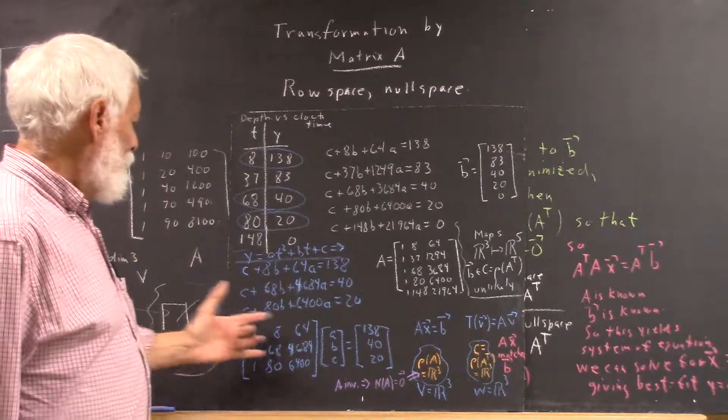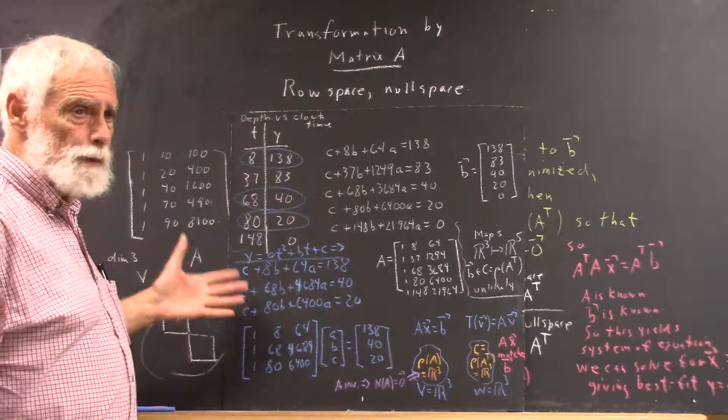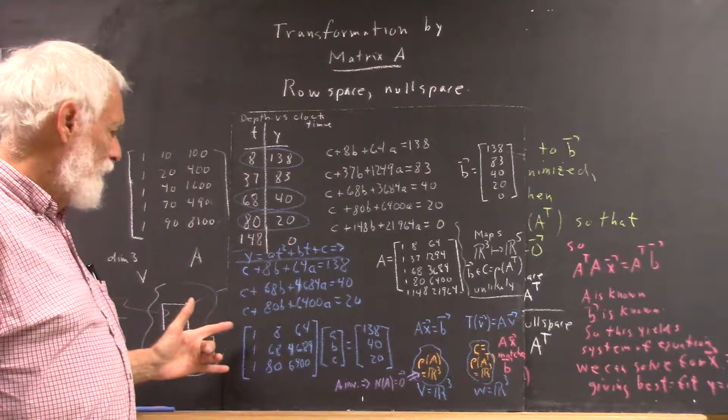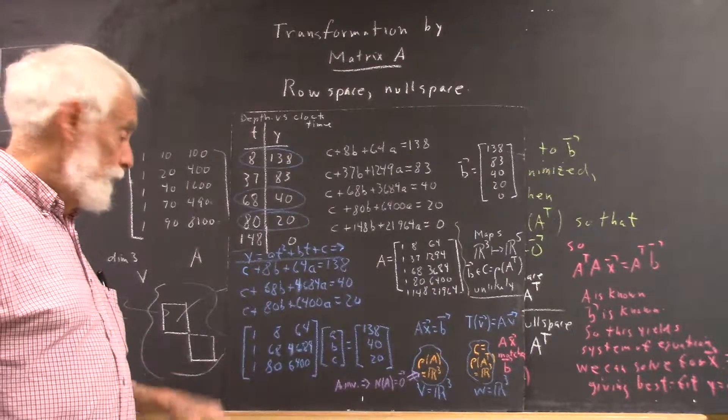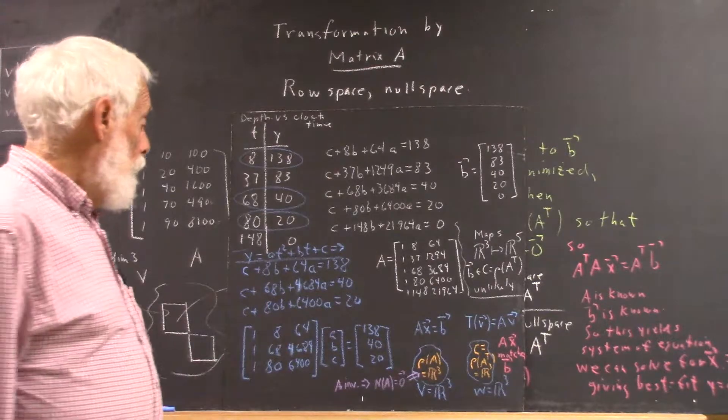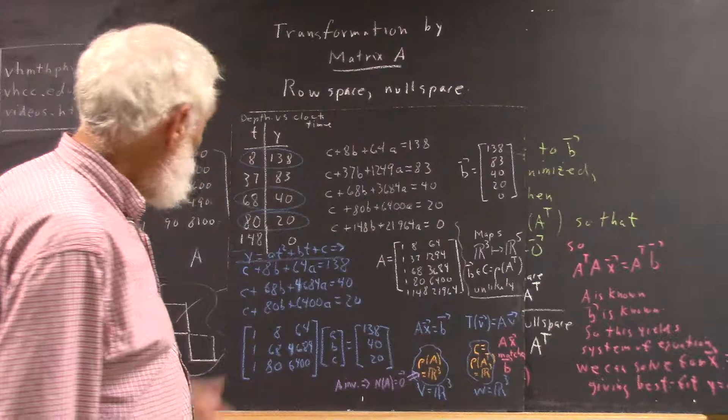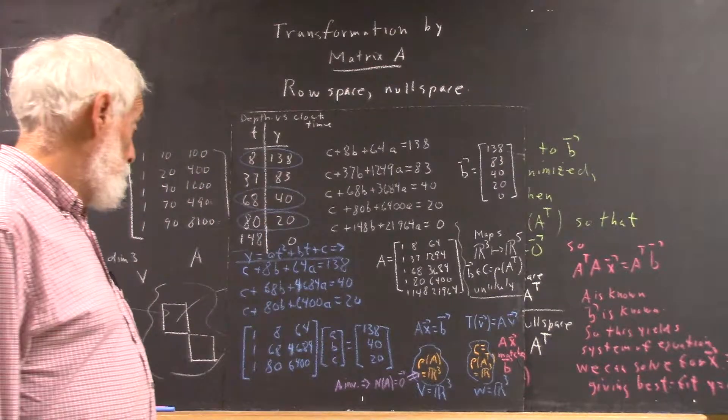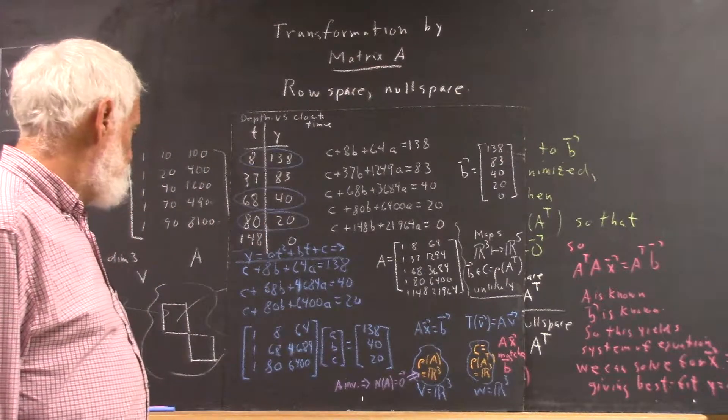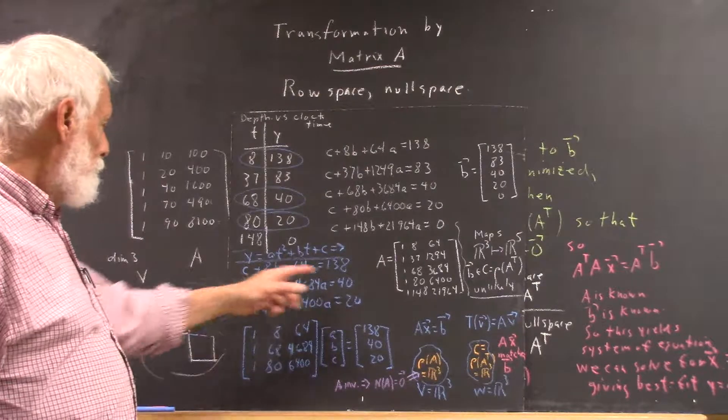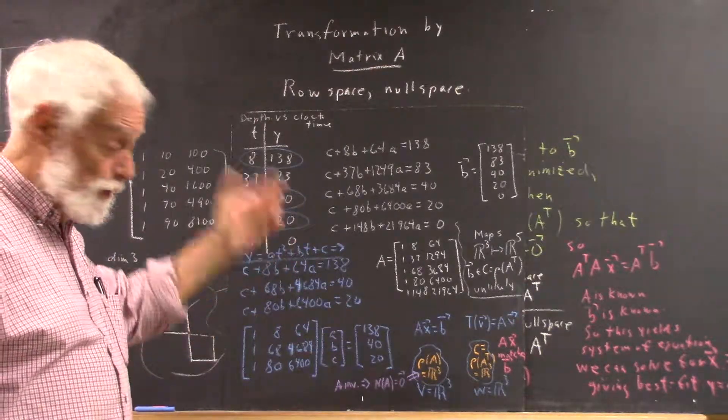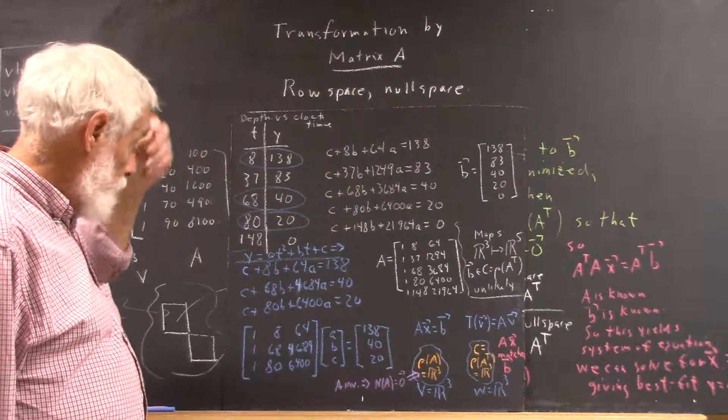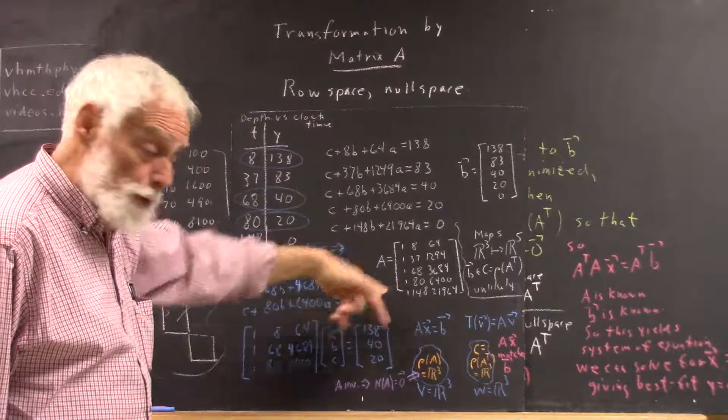And then, especially since this is a quadratic model and we put our data into a quadratic model, that makes it even more certain that this matrix is invertible. The only way this matrix wouldn't be invertible, in fact, would be if you had different values of y for the same value of t. Okay. Well, anyhow, here's our matrix equation.